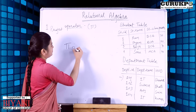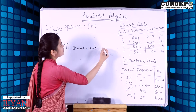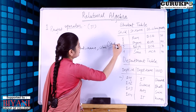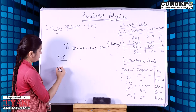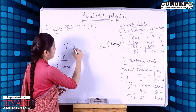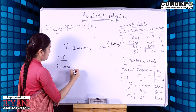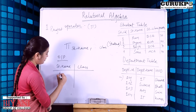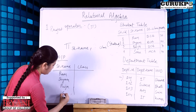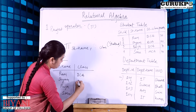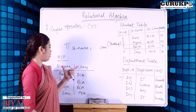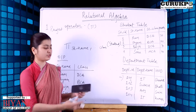Let's take an example of the project operator. If we want to select two columns from the student table, we write the two column names we want to select. It gives us the output with columns student name and class, returning values like Ram, Sham, and their corresponding class. So it gives us two columns — student name and class — as output.